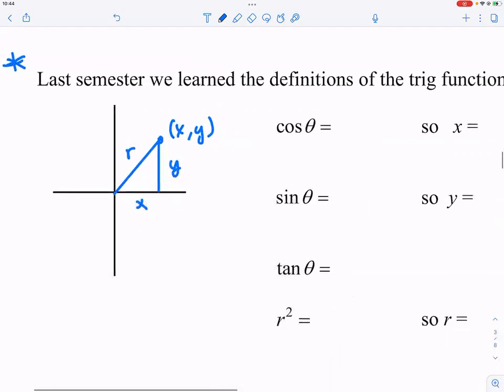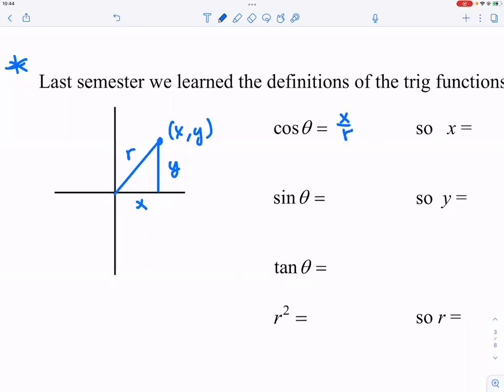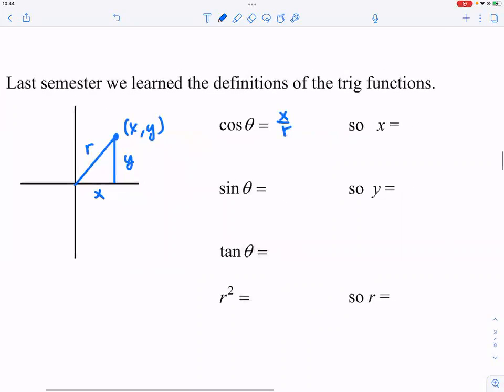Since last semester, we learned about cosine theta is X over R. So X is equal to R cosine theta. Let's go ahead and give it a little special emphasis. And you become very sensitive to either X or R cosine theta.